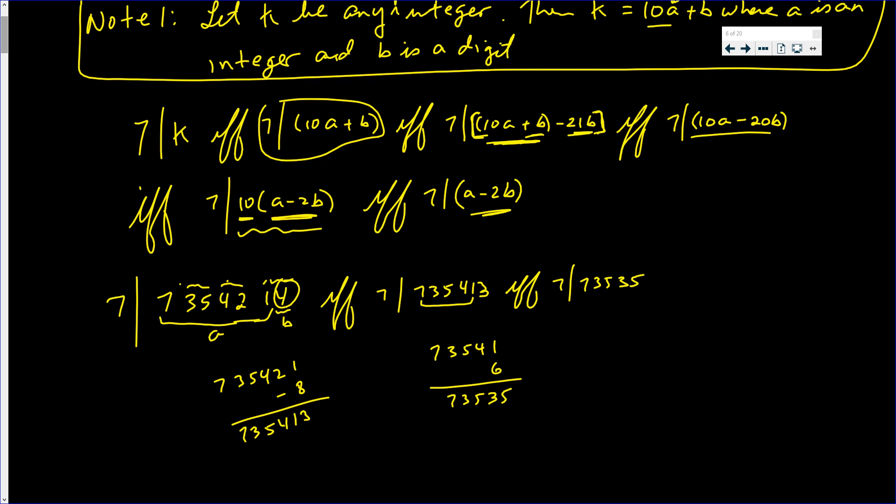But if you don't see it, keep going. Now we take this number 7353 and we take away 2 times 5, which is 10. So we have 7343. Actually, that's the first number I can tell if 7 goes into.